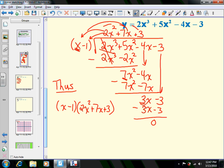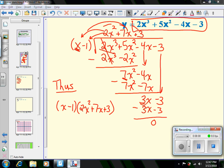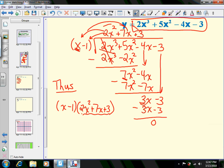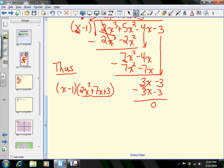Thus, (x - 1) and (2x² + 7x + 3) are two things that multiply to give that original function. We're close to finding factors, which means we're close to finding intercepts. We still have to factor this down a little bit more.